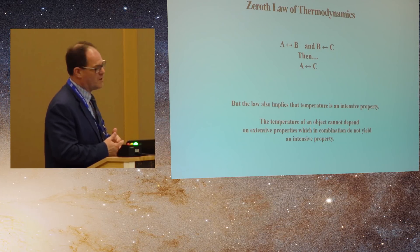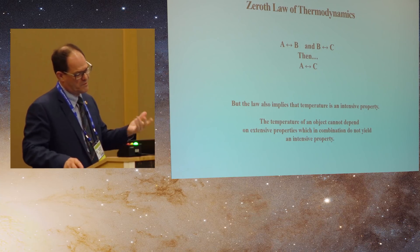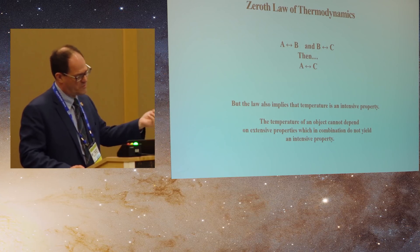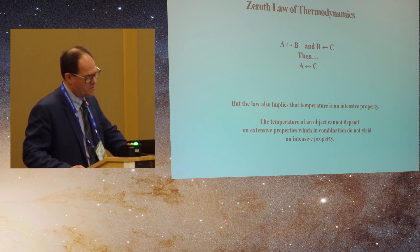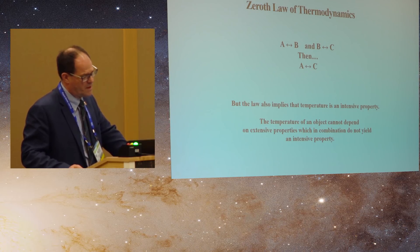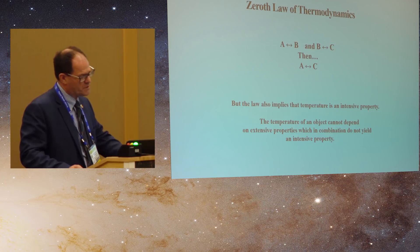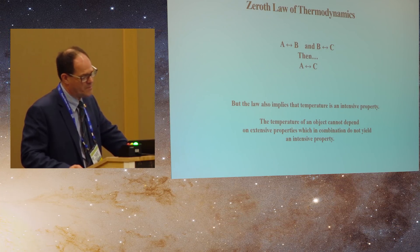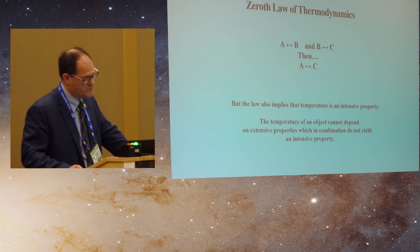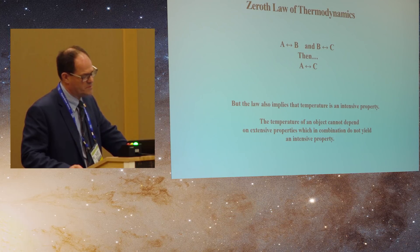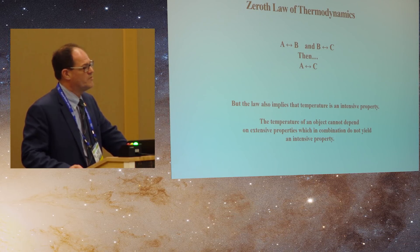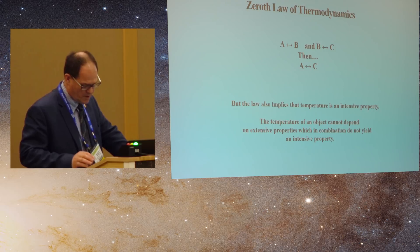So if you start with the zeroth law, most people when you learn the zeroth law you just think in terms of if A and B are in equilibrium and B and C are in equilibrium then A and C must be in equilibrium. But the law also implies that temperature is an intensive property. So the temperature of an object cannot depend on extensive properties which in combination cannot yield an intensive property.